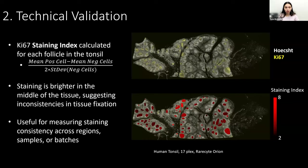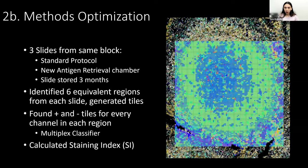A metric like this is useful for measuring staining consistency across batches, regions, or samples. We also used something very similar for methods optimization. In this case, we took three slides from the same block: one using the standard protocol, one using a new antigen retrieval chamber, and one repeating the staining with the new antigen retrieval chamber on a slide that had been stored for three months — and in all honesty, we know that slide was not stored properly, as we detected a little bit of moisture inside the box.